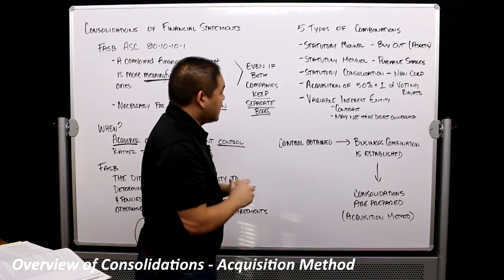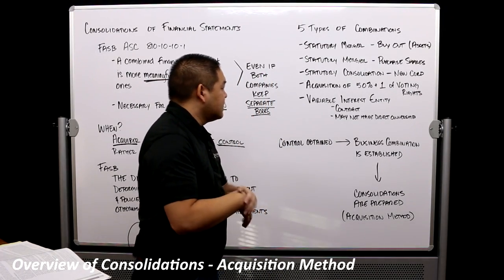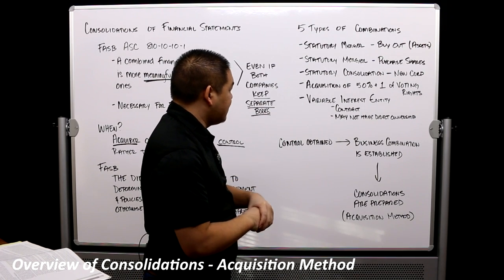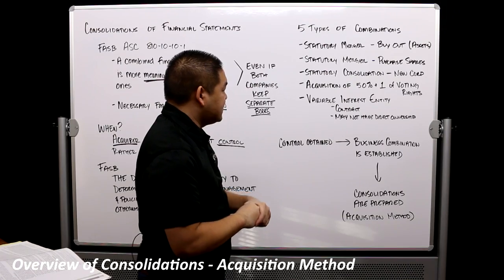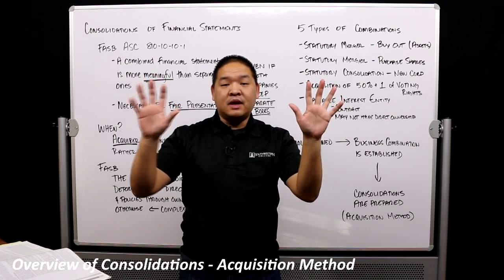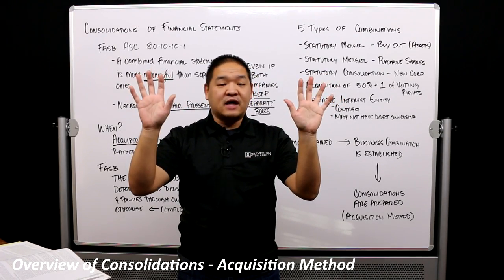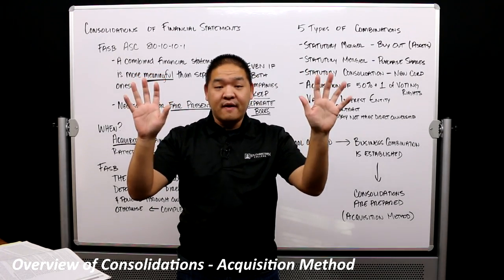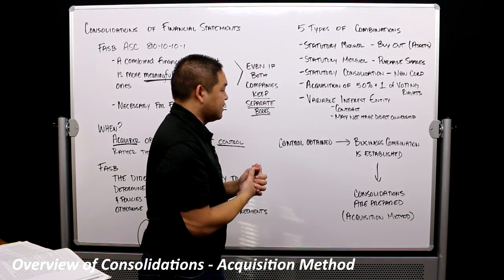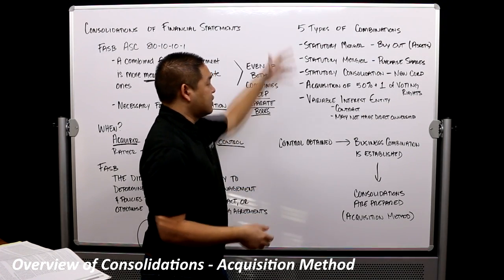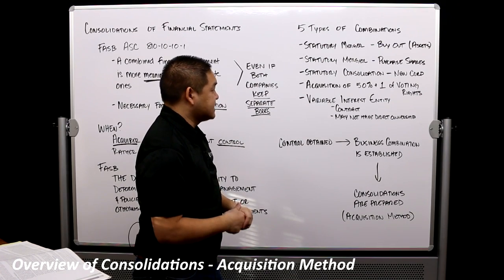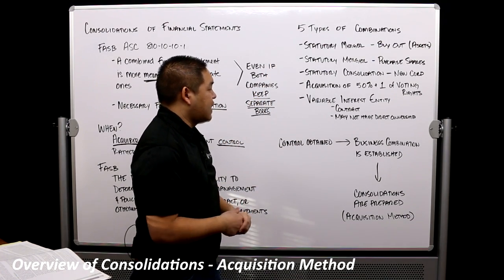The last type is VIEs — variable interest entities. Variable interest entities are typically done because of contracts: Company A may have a contract to manage Company B. There may or may not be any direct ownership, and not necessarily 50% plus one. These are very different, and we'll talk about those in a different lesson. Those are your five types of combinations.